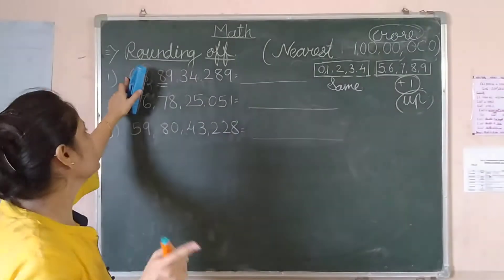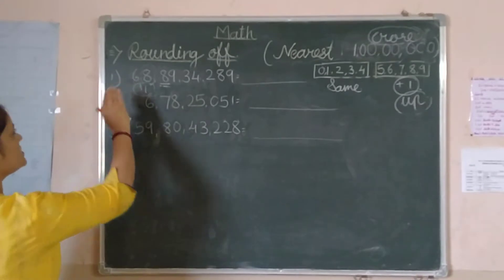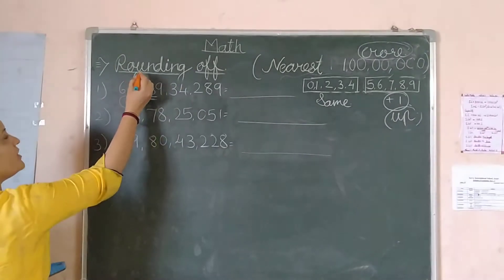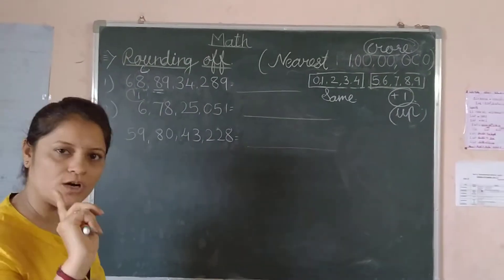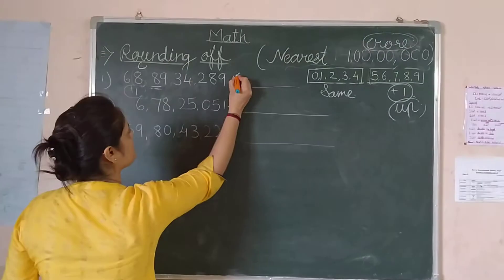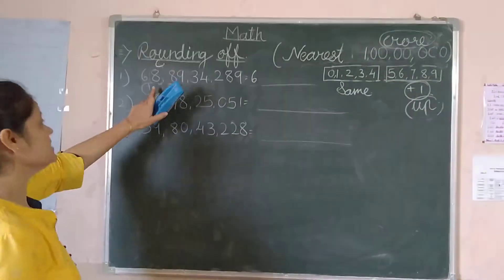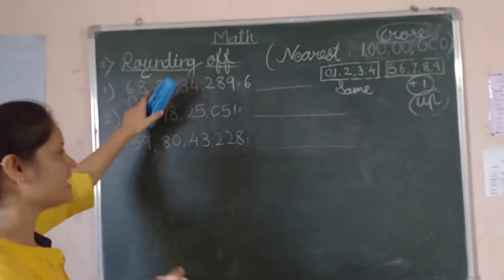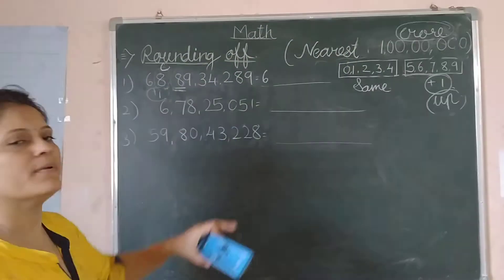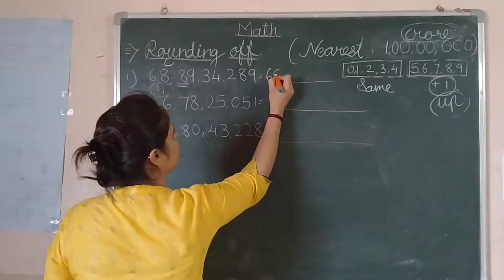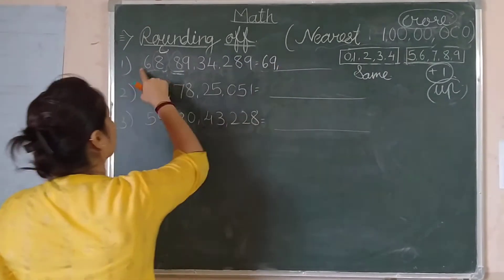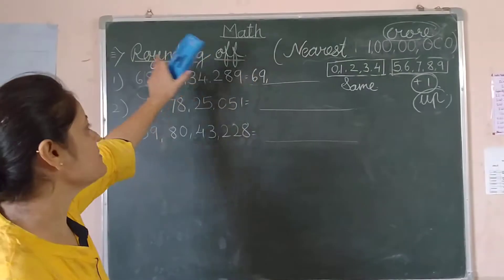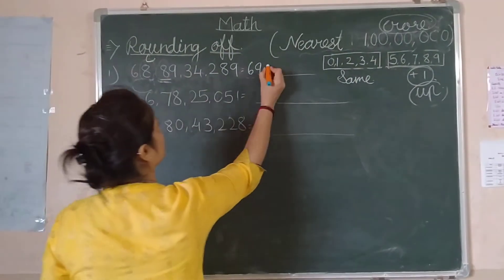We don't touch the 10 crore place. Why? Because we have only rounded off the crore place. We write 6 in the 10 crore place, and we write 9 instead of 8. So our answer is 69 crore.